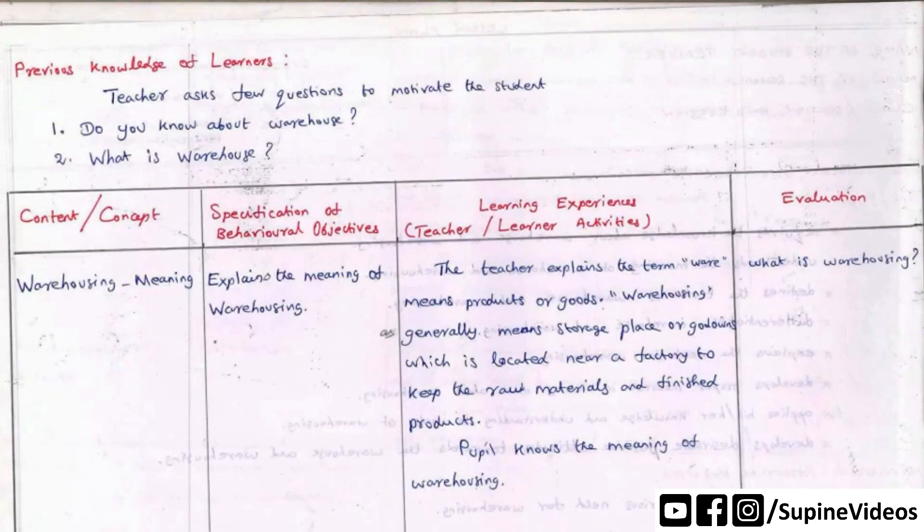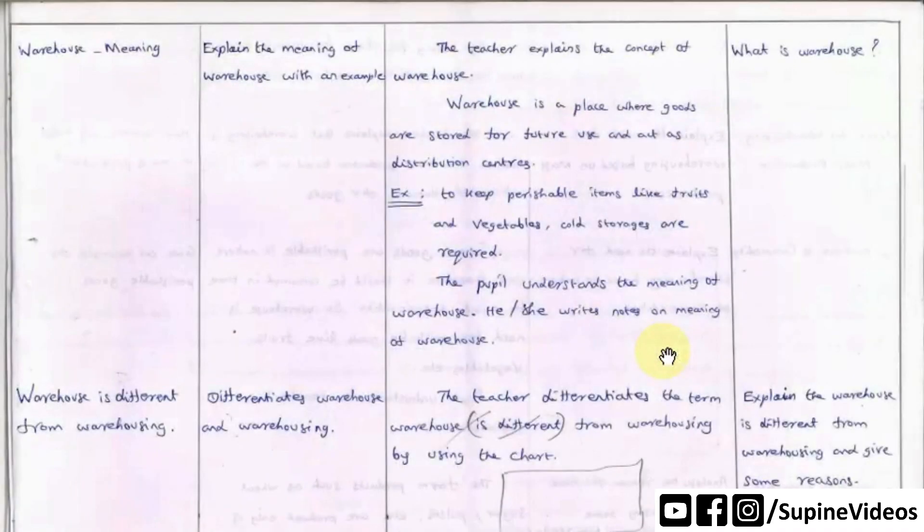The Previous Knowledge of Learners is on the 3rd page. There are 4 types of topics you can segregate: Concept, Specification of Behavior Objectives, Learning Experiences, and Evaluations.